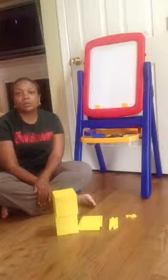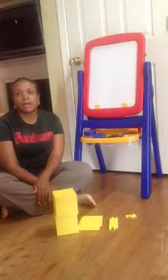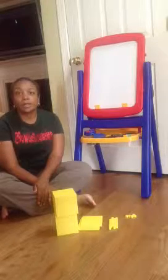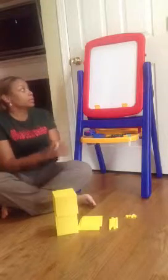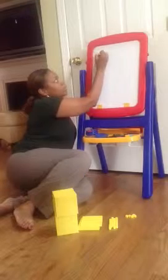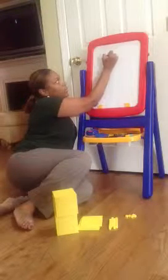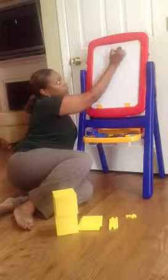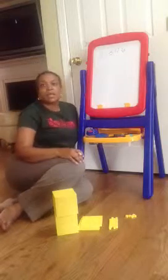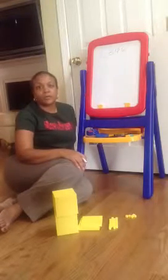Hello. Today we're going to talk about three different ways to write numbers. For instance, if I took the digits and I wrote 2,346, using digits to write the number is called standard form.